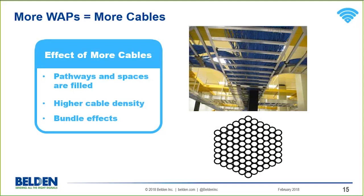With more access points we have more cables, and our pathways and spaces are going to get filled. We must be mindful of that, especially in new construction — we don't want to fill spaces to the max, leaving room for the future. When cables are more densely packed, we get a bundle effect. Bundle effects are twofold: if delivering power, heat can build up; and if going to higher data rates, we have to ensure cables handle those rates without what we call alien crosstalk.